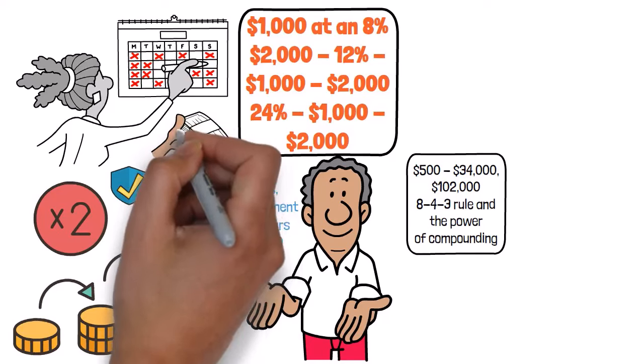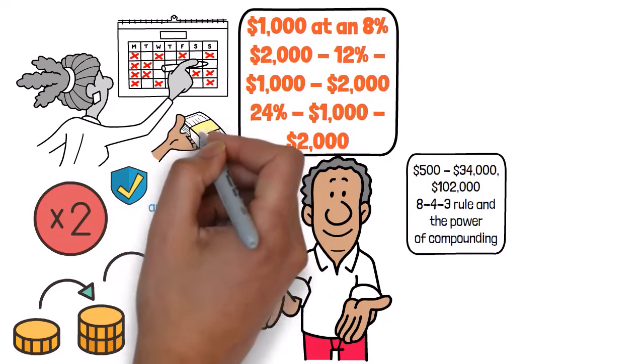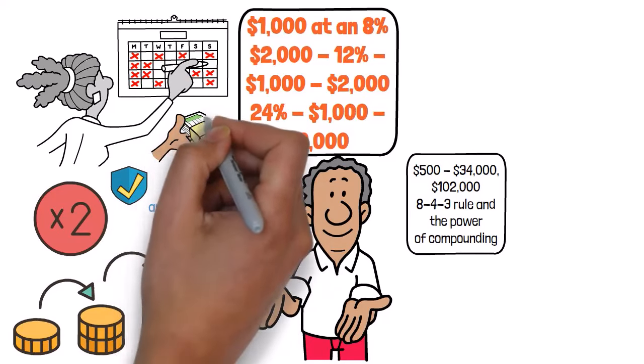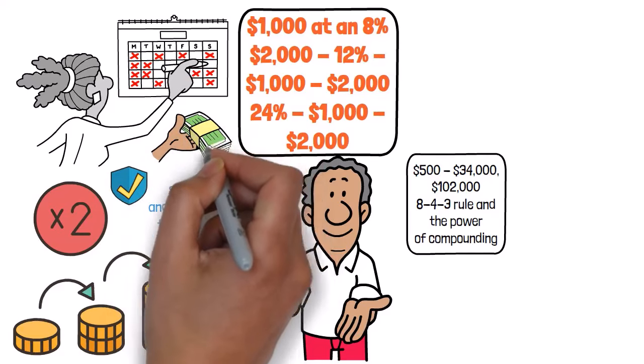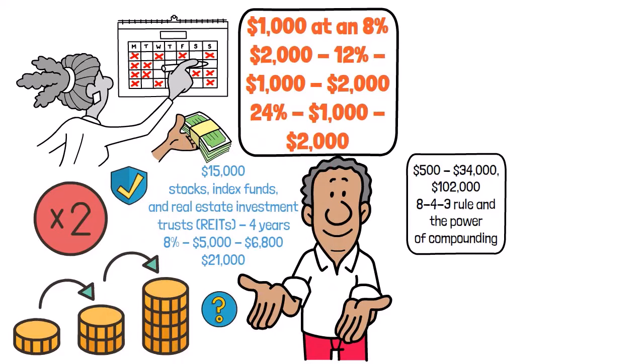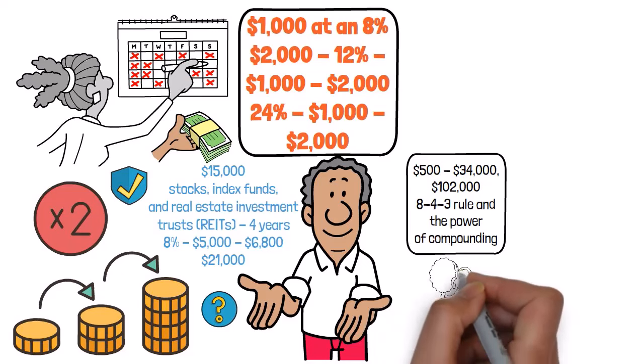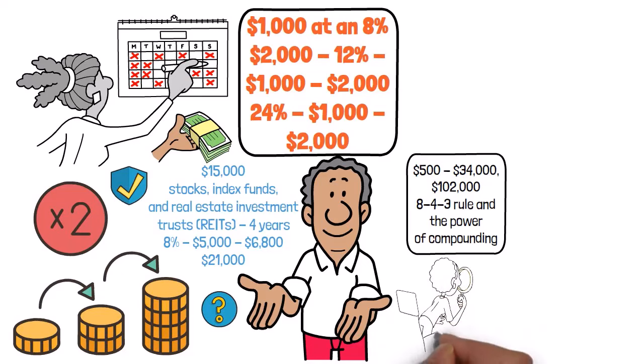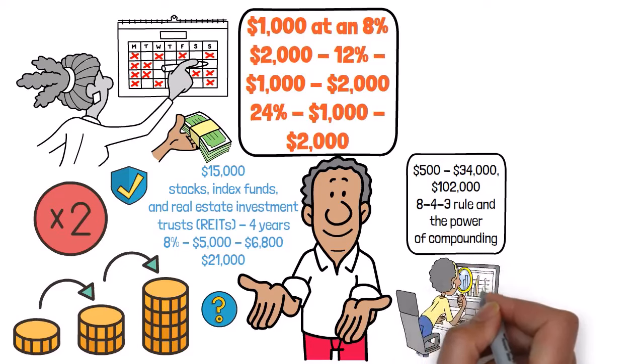Investing works the same way. Even if you're only putting away small amounts at first, those regular contributions can really add up over time, thanks to the magic of compounding. And speaking of consistency, it's crucial to stick to your plan even when the market gets a little rocky. Sure, there will be ups and downs along the way, but by staying the course and not getting spooked by short-term fluctuations, you give your investments the best chance to reach their full potential.